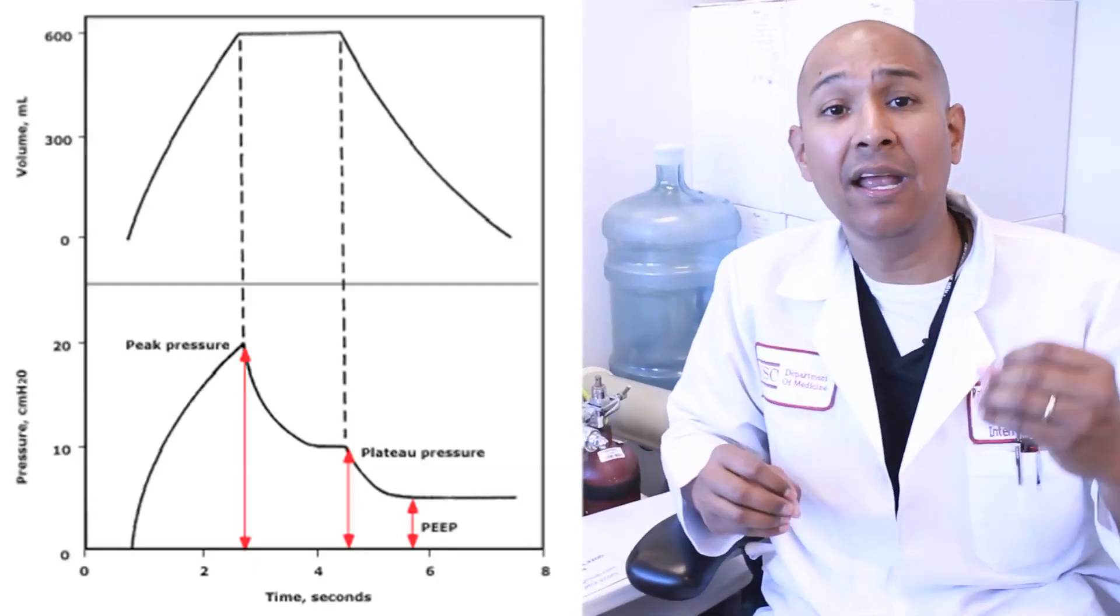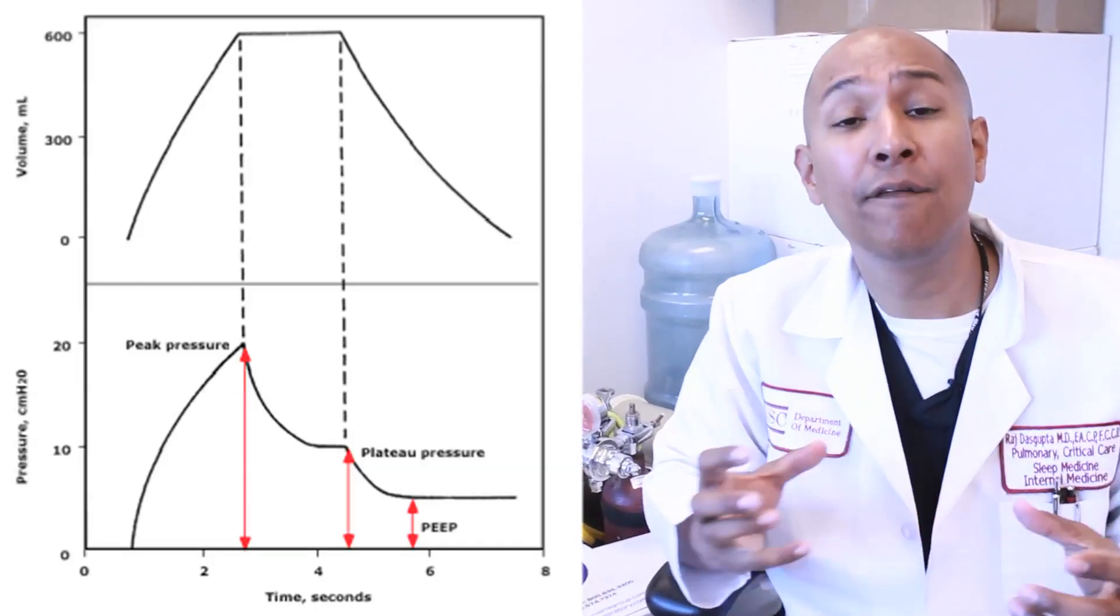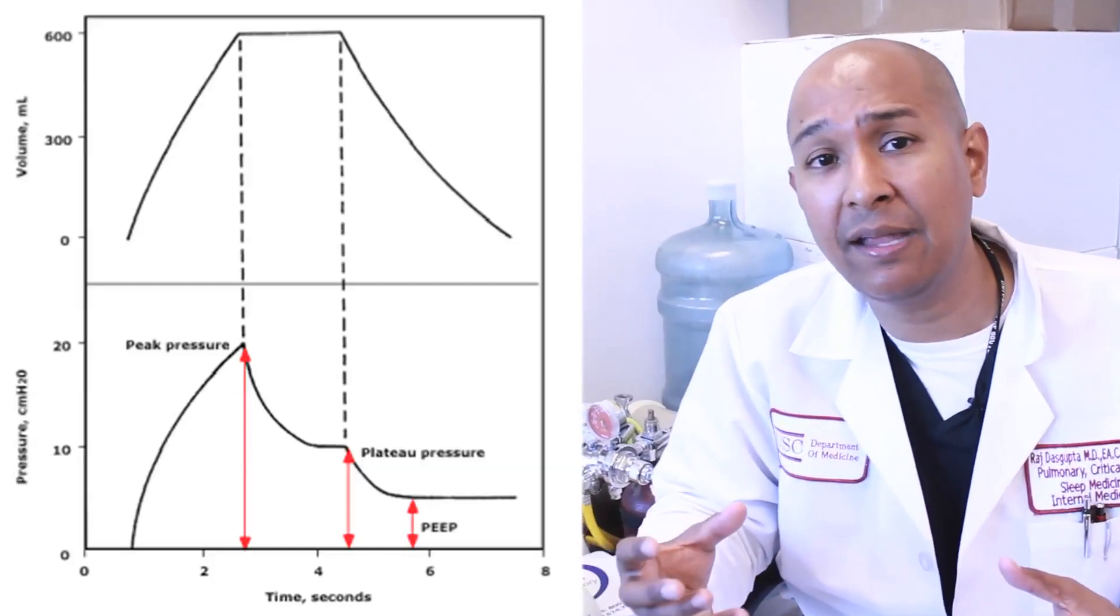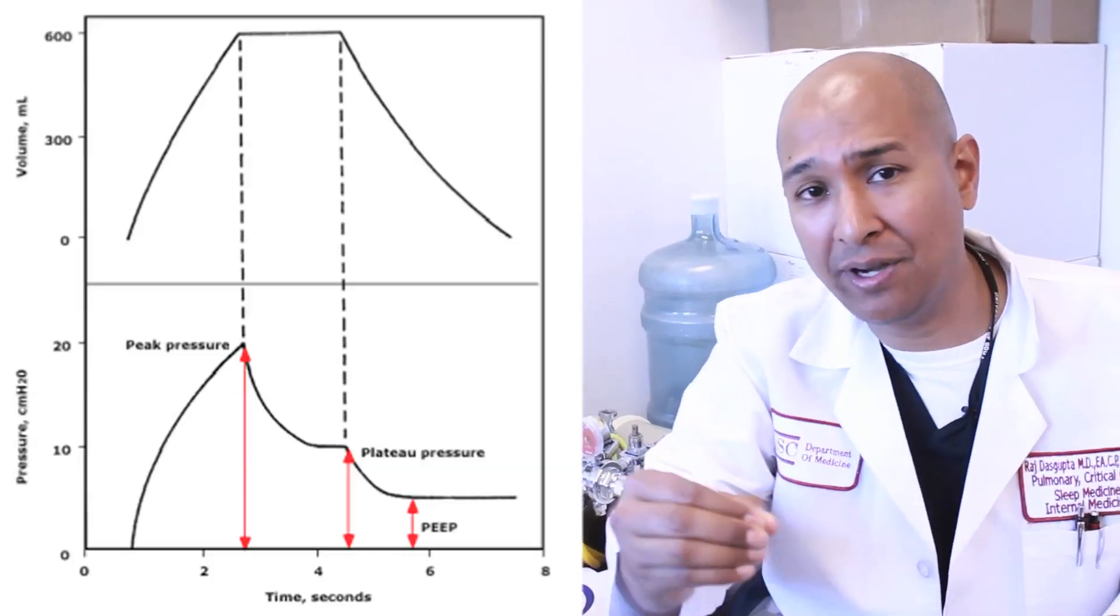Examples of a high peak pressure would be biting down on the tube, having mucus plugging in the tube, versus compliance issues from an elevated plateau would be things like ARDS, Adult Respiratory Distress Syndrome.